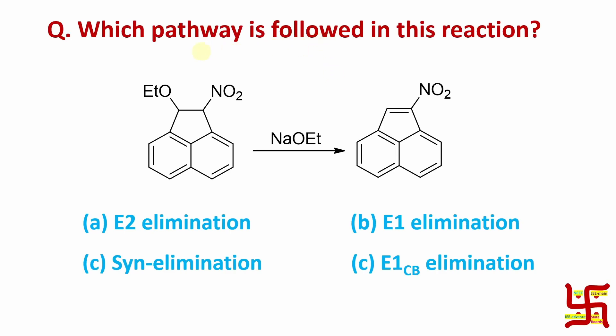So, in this case, which pathway is followed in this reaction? Answer, obviously, this should be option D. It's E1CB pathway.